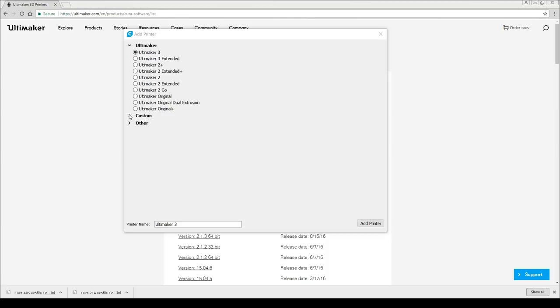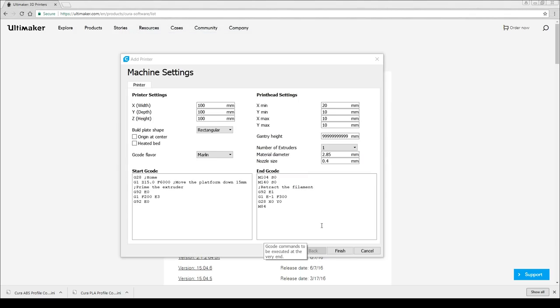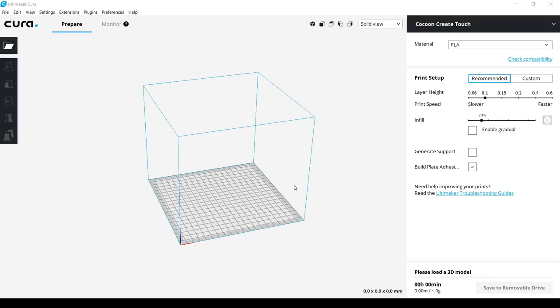Going to follow the instructions exactly so we're going to go to custom for our printer. Cocoon create touch. The instructions don't actually have values for most of these so we'll just enter what we can. So the width and depth 200, height 180. Nozzle size is already 0.4. Tick heated bed. And then finish.